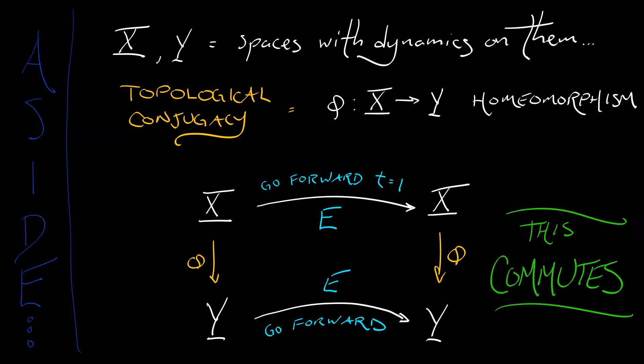That means you can go forward in X along the dynamics and then jump down to Y, or you can jump down to Y and then go forward one time step in the dynamics and you get to the same place no matter where you start. If you have that type of homeomorphism, that topological conjugacy, then we say that these two spaces have topologically conjugate dynamics. We consider those the same.